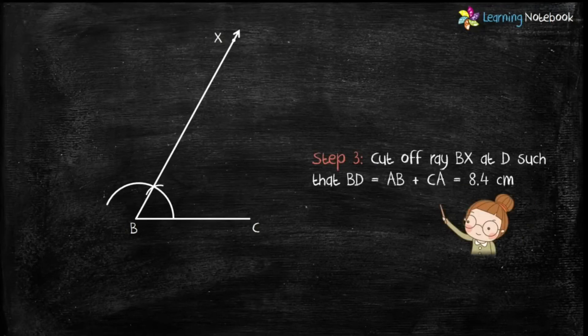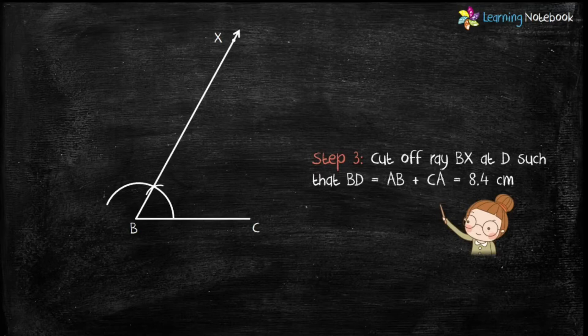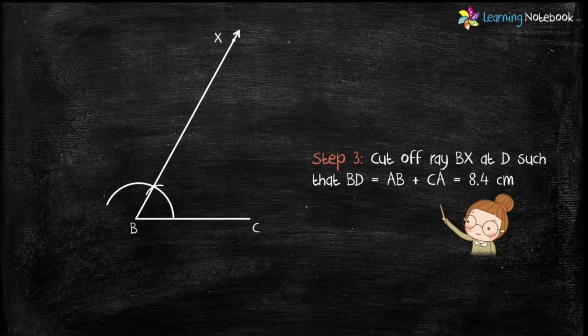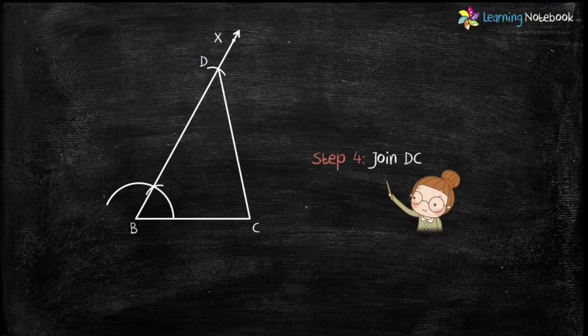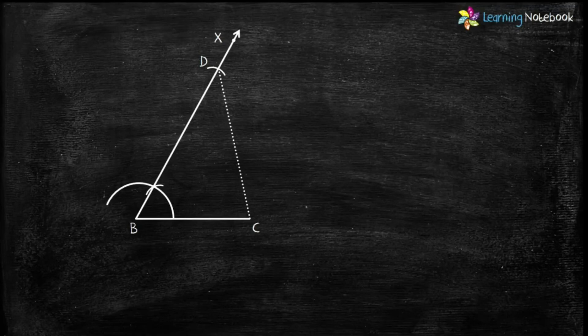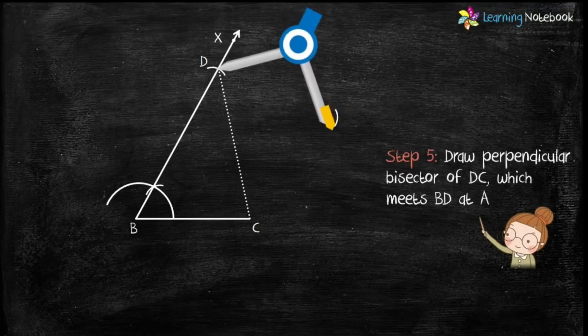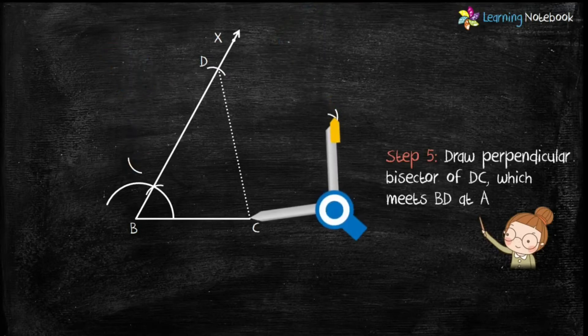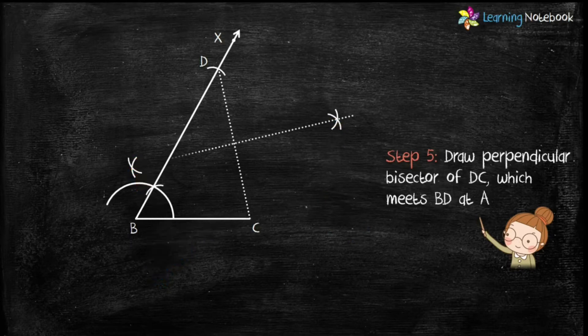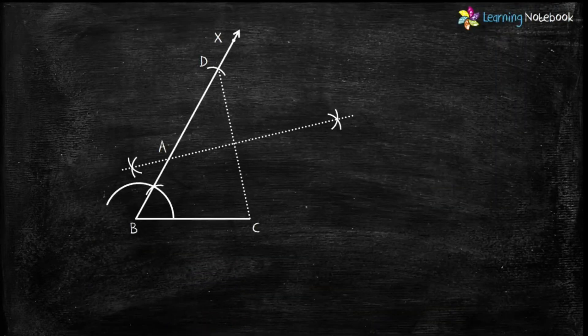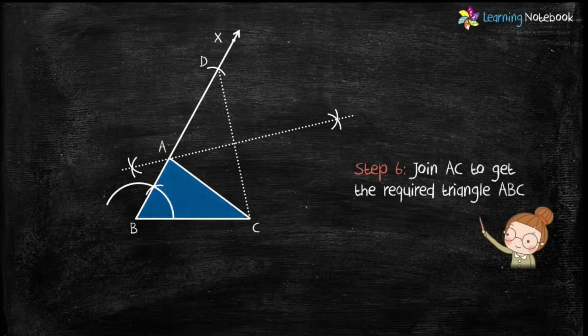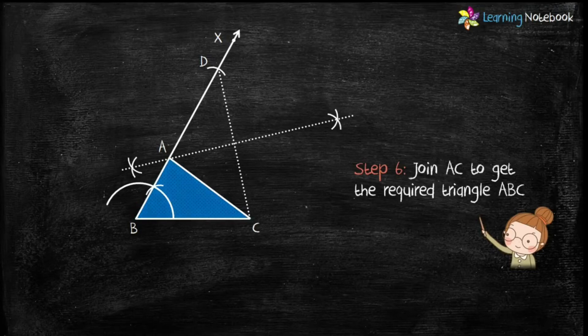Now, we are given AB plus CA equals to 8.4 cm. So, take radius of 8.4 cm and cut off ray BX at point D. Step 4 is, join DC. Step 5 is, draw a perpendicular bisector of DC which meets BD at point A. Students, you may refer to part 2 of this chapter to learn step by step construction of how to draw a perpendicular bisector. Now, last step is, join AC to get the required triangle ABC.